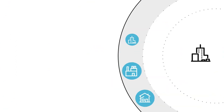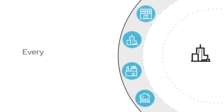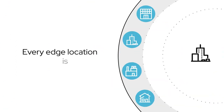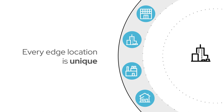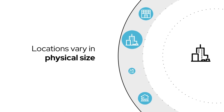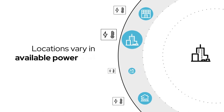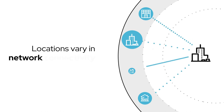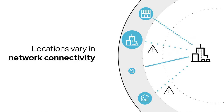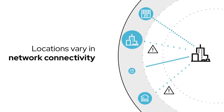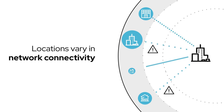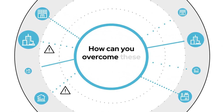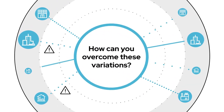But just as every use case is unique, every edge location is too. Locations can vary in physical size or available power and cooling capabilities. They can also vary by network connectivity that can be slow, unreliable, or intermittent between core and edge sites. So, how can you overcome these variations?